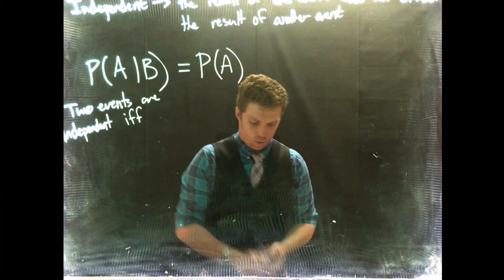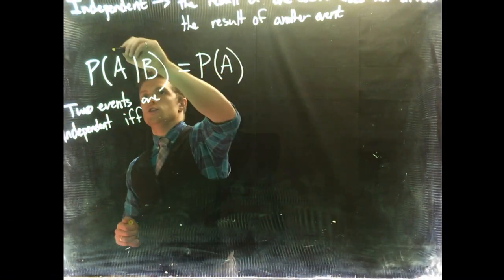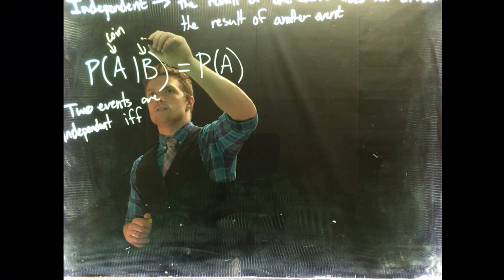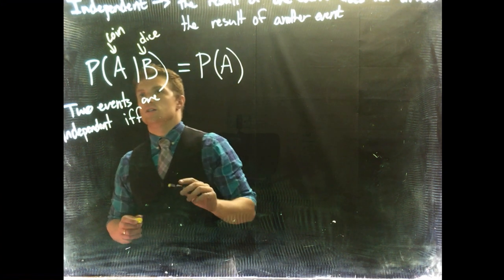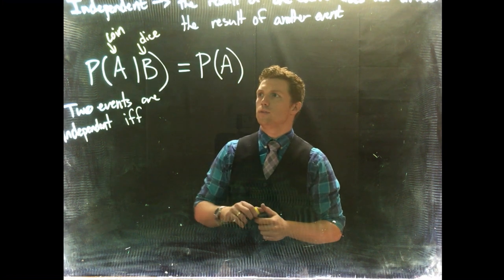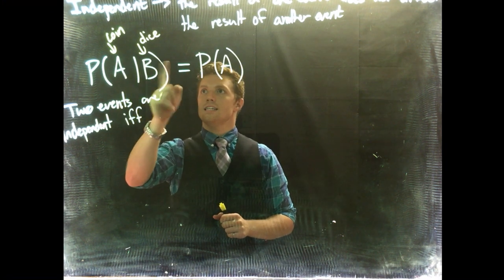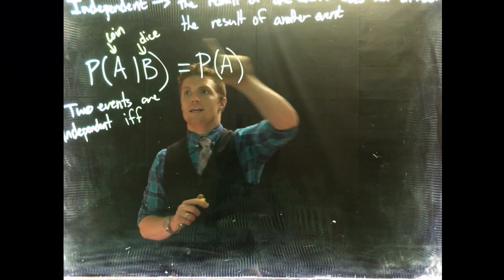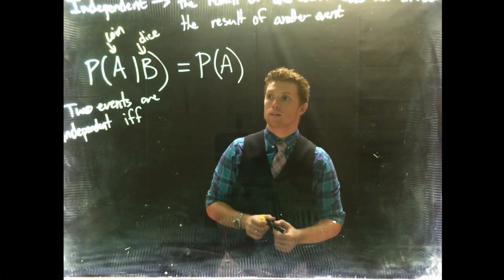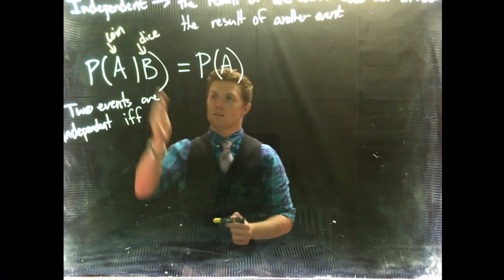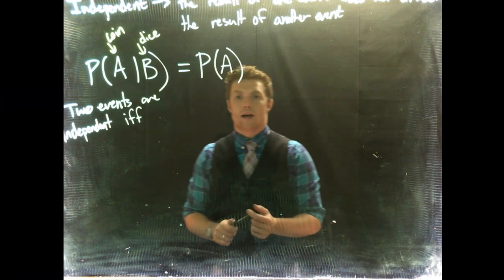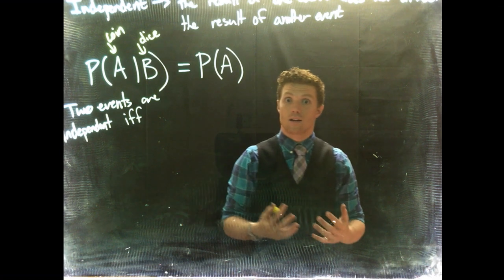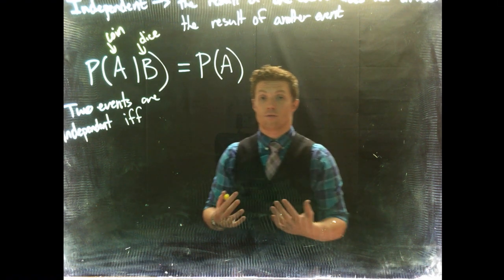So let's talk about this in terms of our coin flip. We can do coin and dice. The probability of flipping heads given that the dice is a six would still just equal the probability of A. Probability B has no effect on probability A, so this would be an independent event. Now in a contingency table, this is really useful because we can figure out if events are independent from one another.